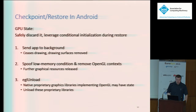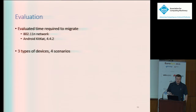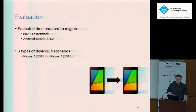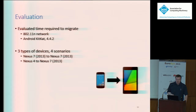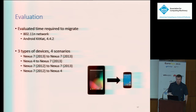Having covered both key mechanisms of Flux, I'll move on to the evaluation. To verify that unmodified applications can be migrated successfully, we went on Google Play and grabbed 18 of the most popular applications available — well-known apps like Candy Crush Saga, Snapchat, and Instagram. We subjected all these applications to migration across several different devices and measured the time it takes. We used three devices in four different scenarios: migration between two second-gen Nexus 7 tablets where hardware and form factor remain constant; from a Nexus 4 phone to a second-gen Nexus 7 tablet where form factor changes; from a first-gen to a second-gen Nexus 7 where hardware differs significantly; and from a first-gen Nexus 7 tablet to a Nexus 4 phone where both hardware and form factor changed significantly.